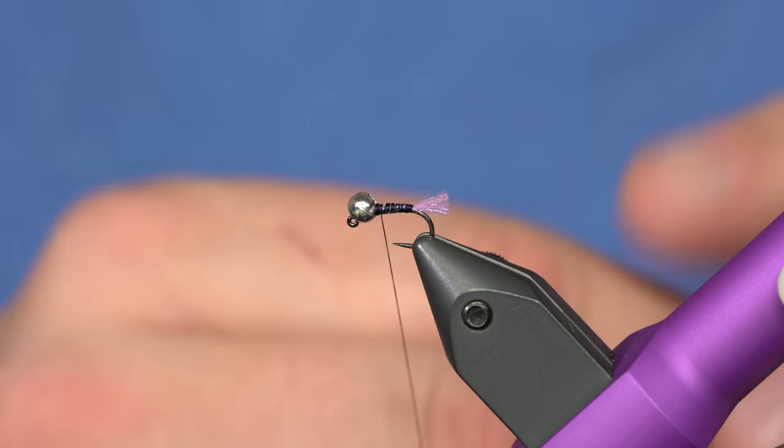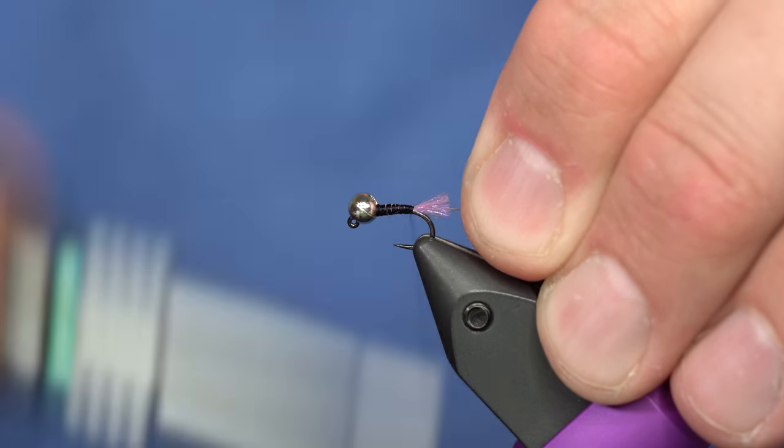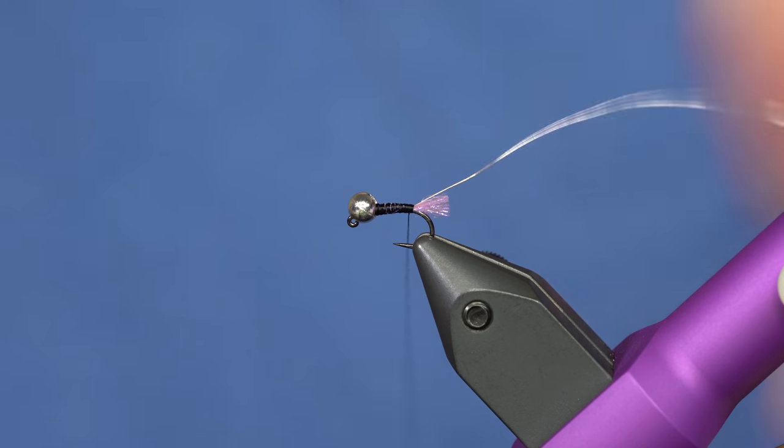The rib is going to be silver wire. I'll just tie that in. And then just whatever hare's ear dub you like. You could use squirrel very likely. I like to keep the body pretty slim.